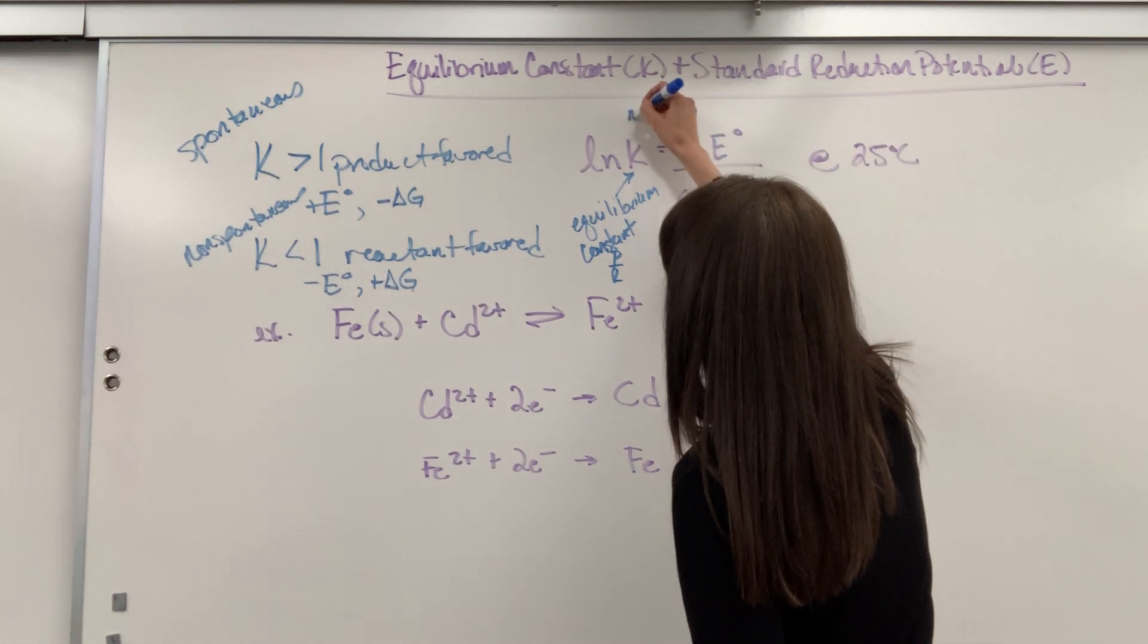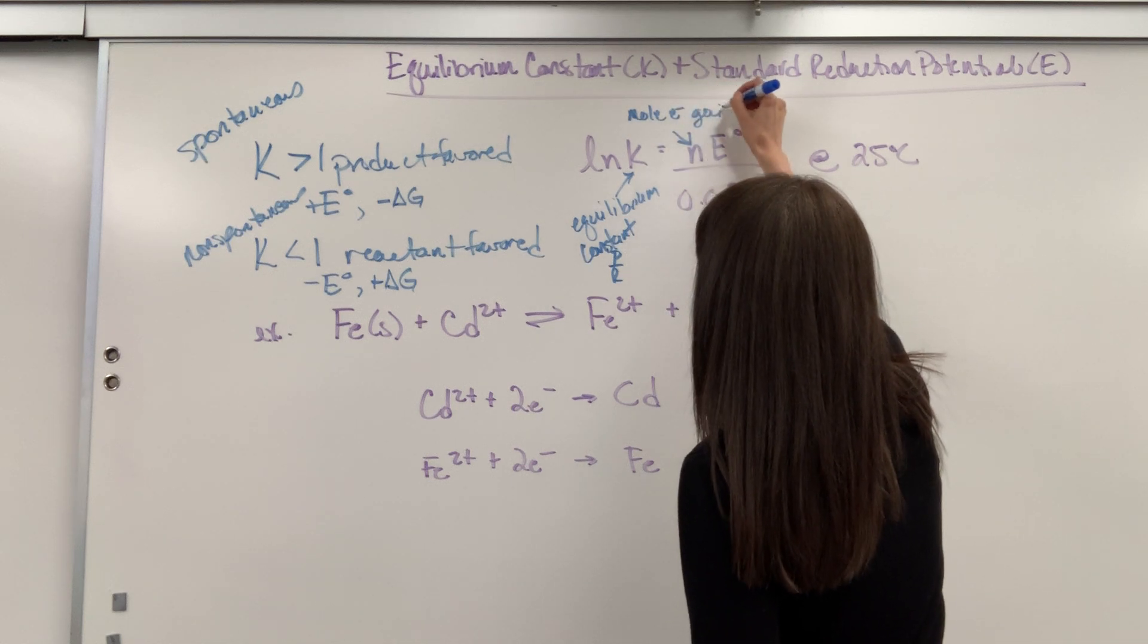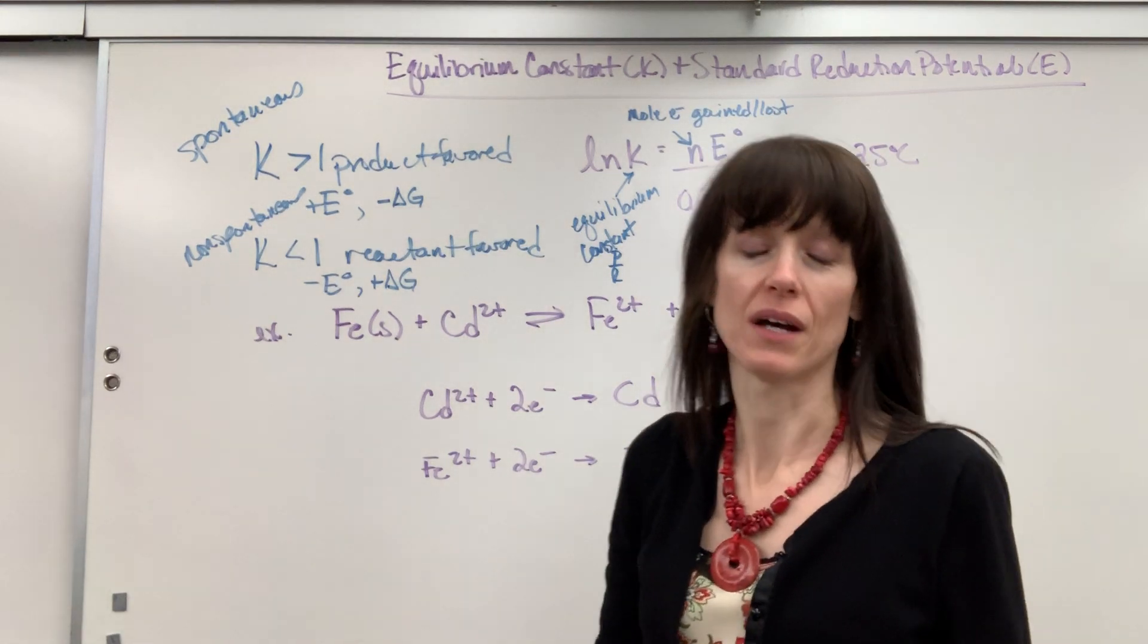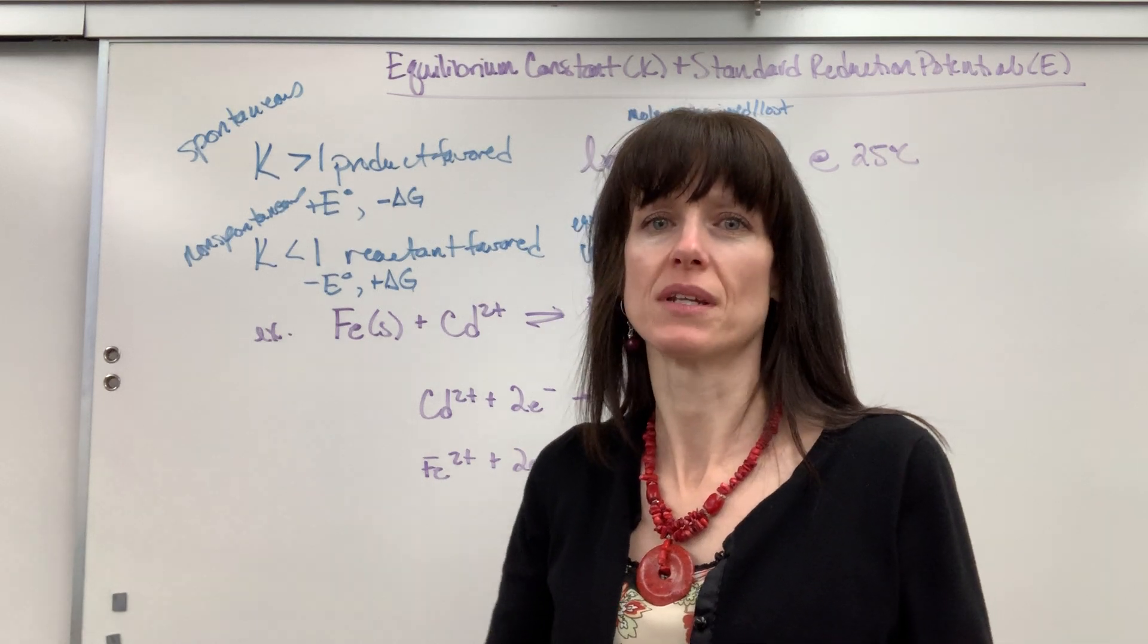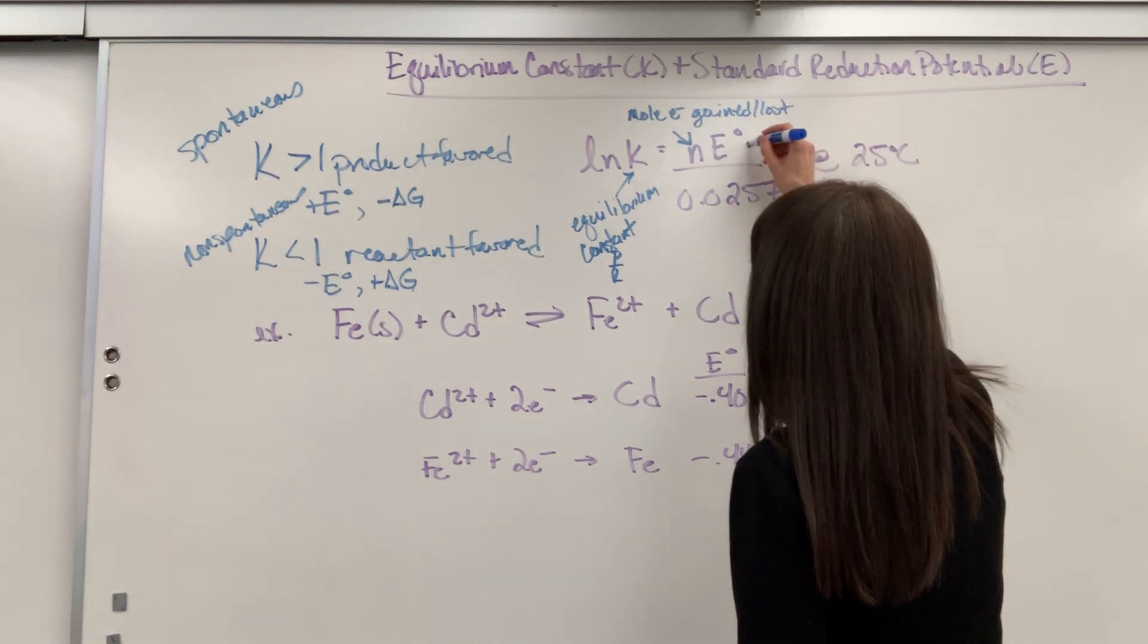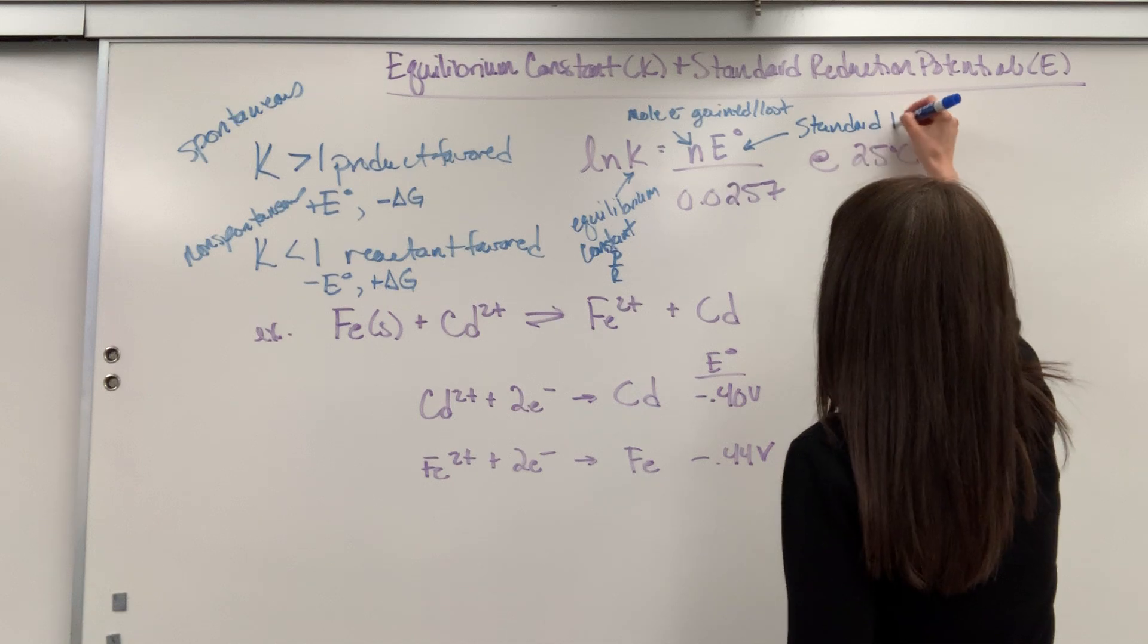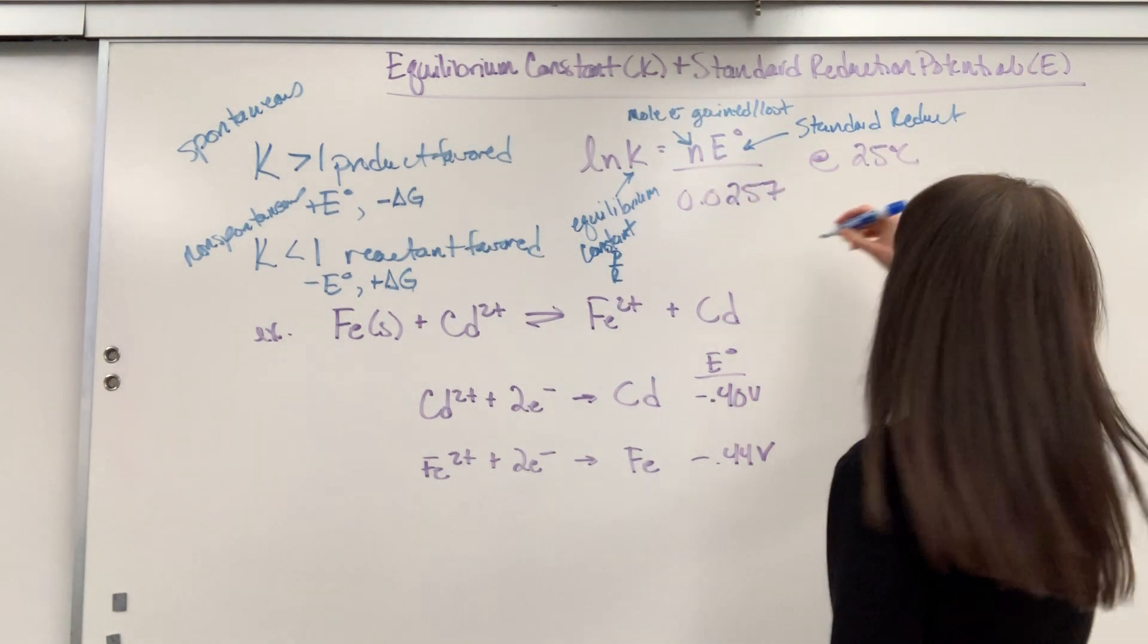Now this is really important. This is going to be the moles of electrons gained or lost. You could also say the number of moles of electrons transferred. So total, what was the number of electrons that were lost? That's the same number of electrons that are gained. And then E°, of course,